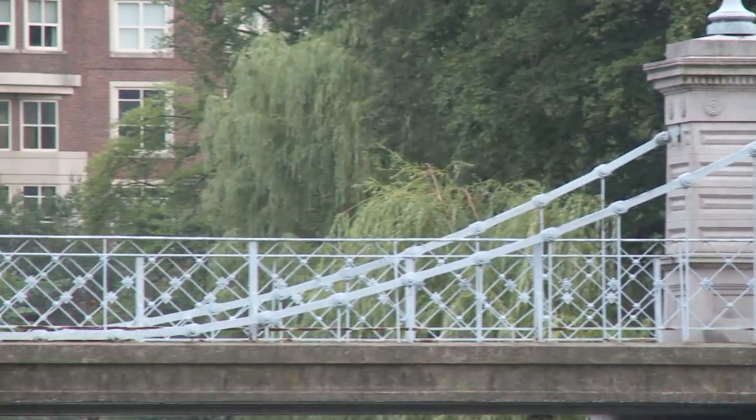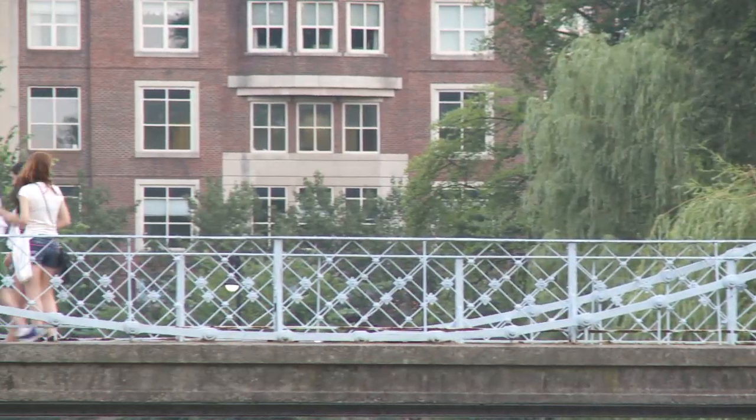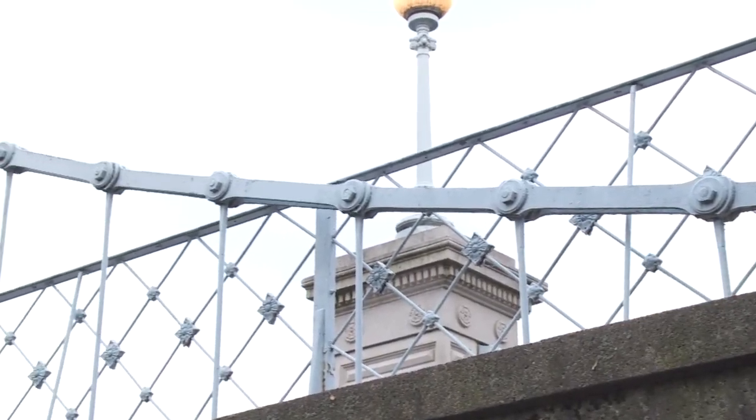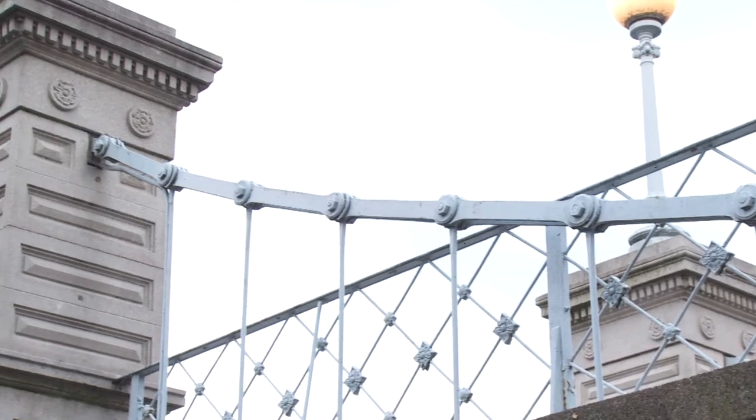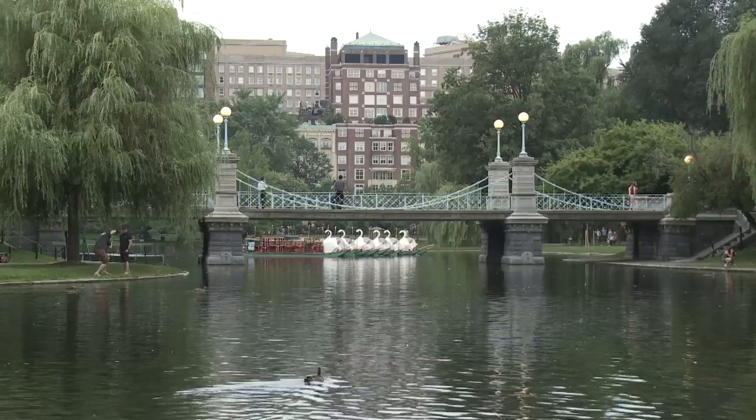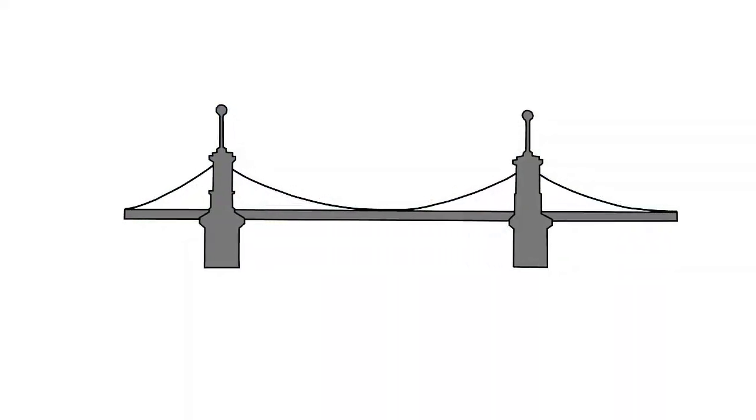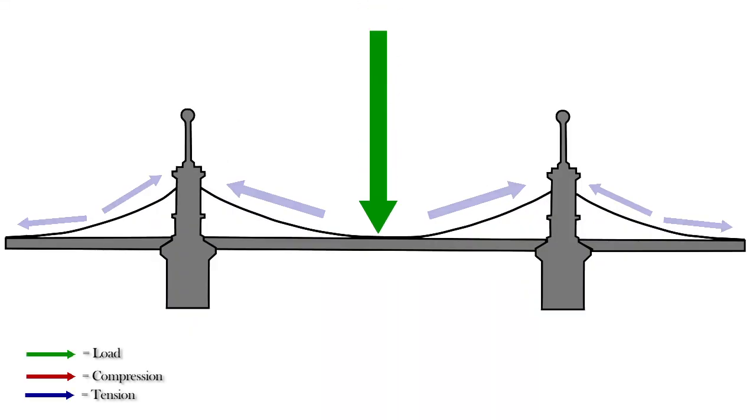Suspension bridges utilize thick steel cables that support the deck and transfer the load to the towers and to the anchors at the end of the bridge. Supporting cables are used to suspend the bridge deck from the main cables. The main cables and supporting cables of the bridge are always under tension. The cables transfer the load to the towers, which experience compression, and also to the anchors at the end of the bridge.